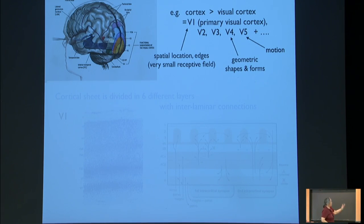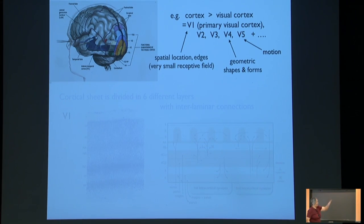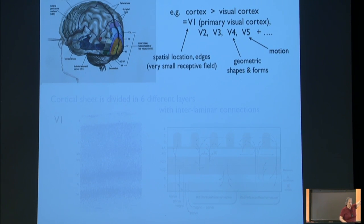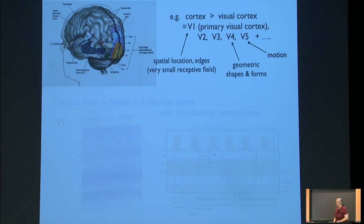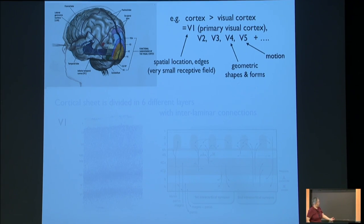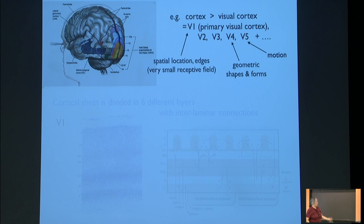Each one has sub-networks. Take the visual cortex, for example, located at the back. Your optic nerve takes the signal to a structure, and then one synapse later it's in the visual cortex. The visual cortex is divided into V1 (primary visual cortex), V2, V3, V4, and V5. They have somewhat different functions. V1 is very good at pinpointing the spatial location of objects and the orientation of edges — it tells you that at each point on the retina there's an edge pointed this way or that way. V1 has very small receptive fields, seeing something like a quarter of the size of the moon.